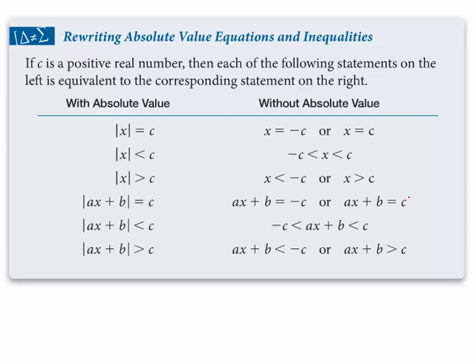This is on page 132 for reference. For absolute value of x less than c, we use an and statement: take the negative of c, place the expression in the middle, positive c on the right. For absolute value of x greater than c, it's an or statement: the expression is less than -c, or the expression is greater than positive c. This comes directly from understanding the graph.